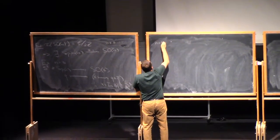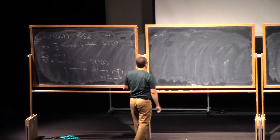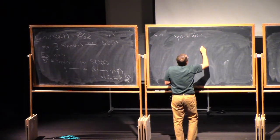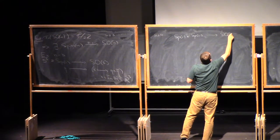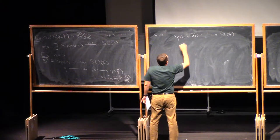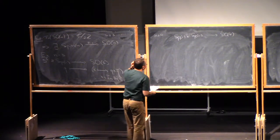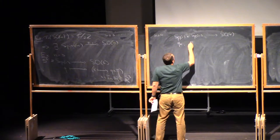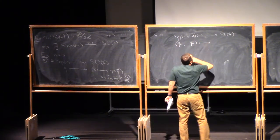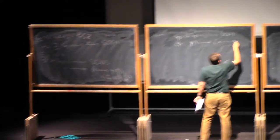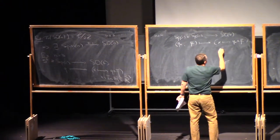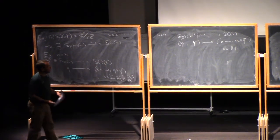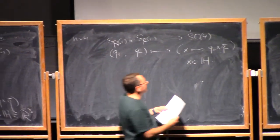And also, in dimension 4, the spin 4 group can be constructed explicitly. So, again, we have SP1 times SP1 into SO4. So, here, to distinguish two copies of SP1, I will endow one with a plus subscript and a minus subscript. Now, if you have two quaternions, Q plus and Q minus, I can send this to a map. X goes to Q plus X Q minus bar, where X is now a quaternion. So, again, you can easily check that this is an orthonormal transformation of a four-dimensional space.